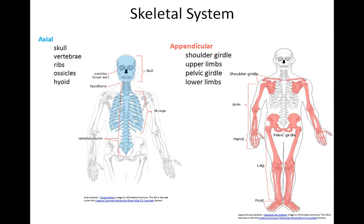Skeletal bones of the human body are classified as either axial or appendicular bones. The bones highlighted in blue are classified as axial skeletal bones. Those making up the axial system include the skull, vertebrae, ribs, ossicles of the inner ear, and the hyoid.